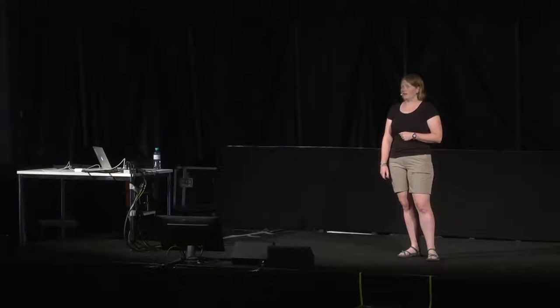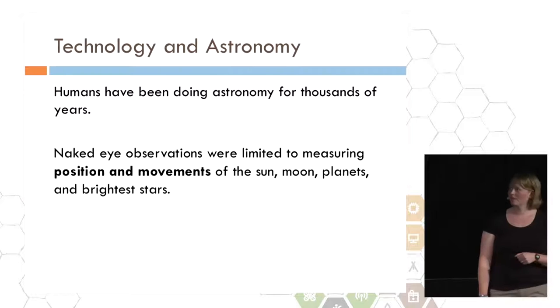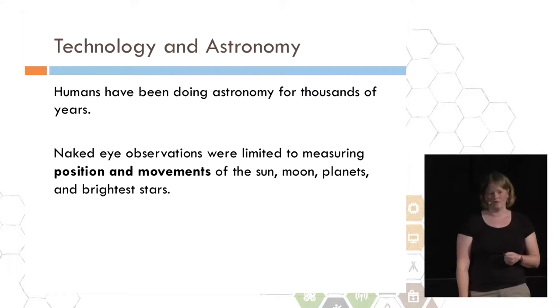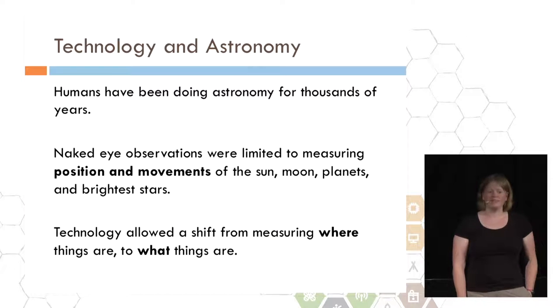I want to tell you a little bit about how technology has revolutionized the field of astronomy, which is where I work. First of all, humans have been doing astronomy for thousands of years. The earliest known astronomical records are from about 8,000 years ago. These typically took the form of drawings of phases of the moon, stars, planets, etc. But naked eye observations are really limited to where things are and how they move. One thing that technology allowed was a shift to thinking about what things are, not necessarily just where they are.